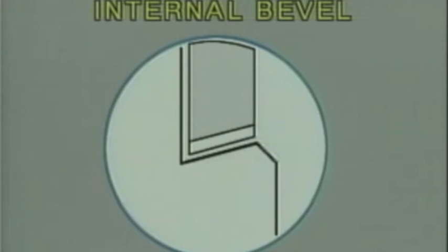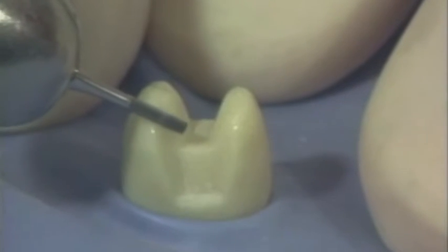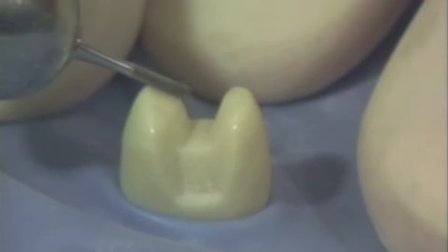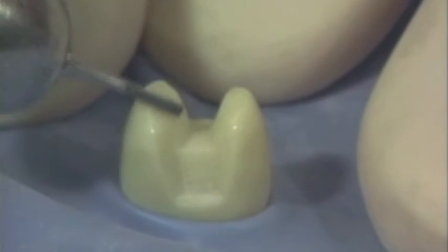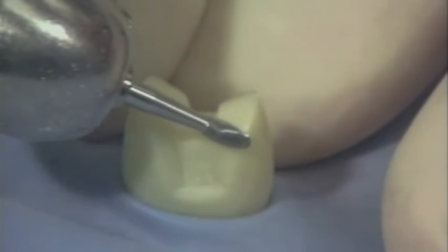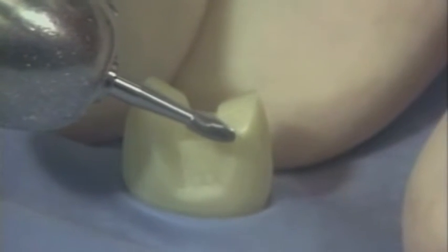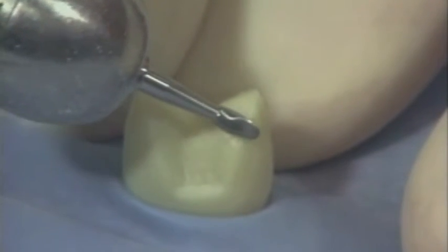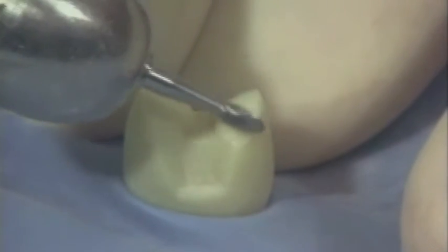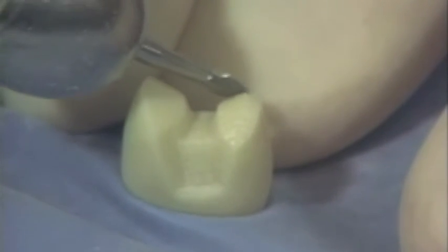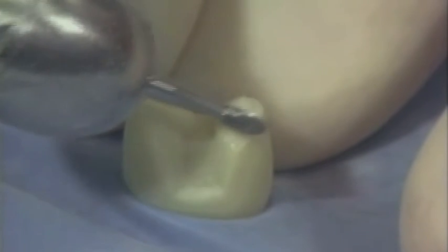These scenes of preparation procedure on an ivory tooth show the typical procedure of initial reduction of cusps with the number 57 burr, followed by the number 7404 burr, which places a counter bevel in a smooth and efficient manner. On the lingual, it creates a counter bevel margin that has good definition and allows a bulk of gold at the margin due to the hollow grinding effect.